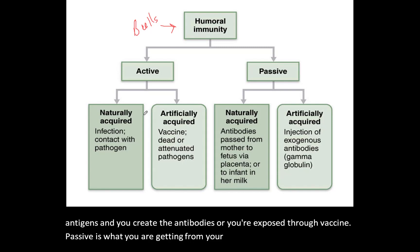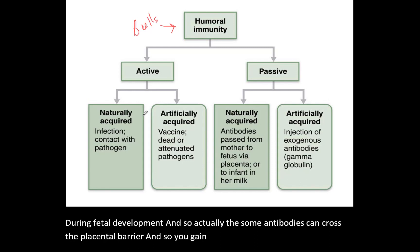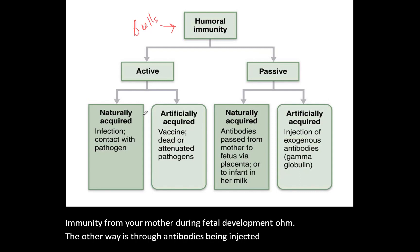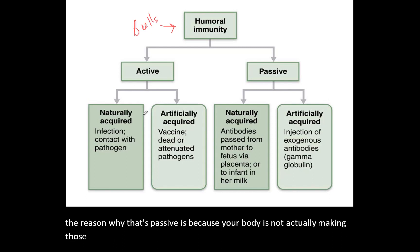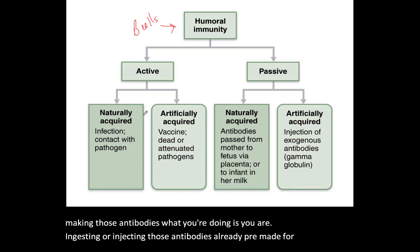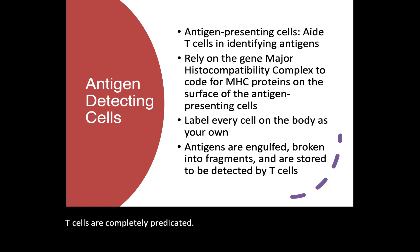Passive immunity is what you receive from your mother during fetal development — some antibodies can cross the placental barrier, giving you naturally acquired immunity. The other form is antibodies being injected directly into you; that's passive because your body is not making those antibodies — they are pre-made. You would have to continuously receive them. This is somewhat analogous to how antibiotics work.